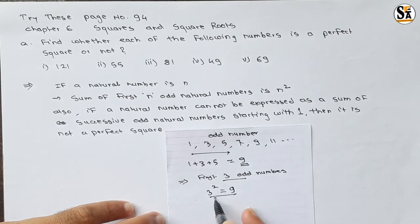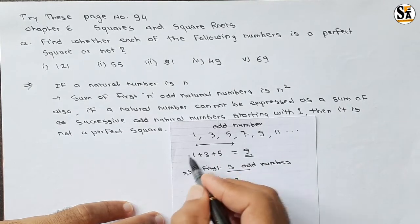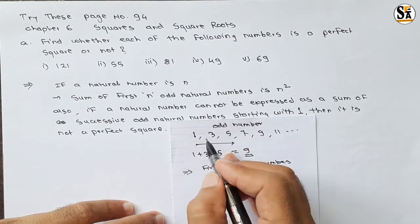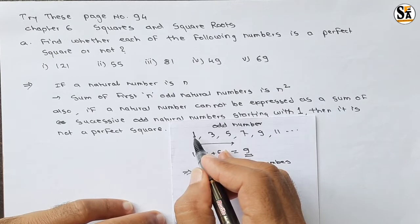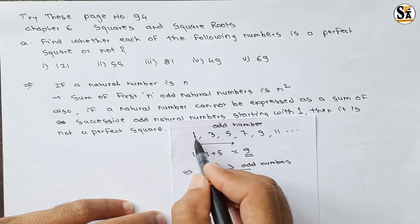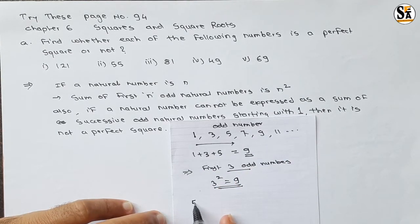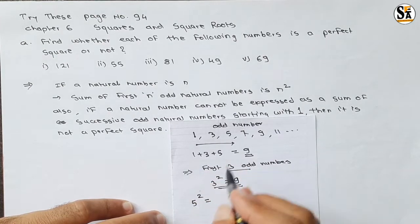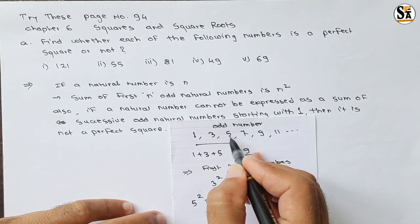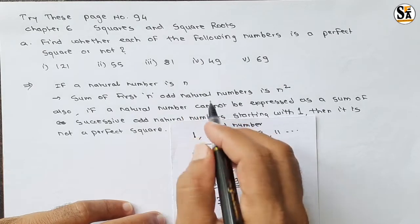Let's take one more example. We will add the first five odd numbers. Always remember, we must start with 1. So the first five odd numbers starting with 1 are: 1, 3, 5, 7, 9. Since we are adding five numbers, the sum must be 5 squared, which is 25. And indeed: 1 plus 3 is 4, plus 5 is 9, plus 7 is 16, plus 9 is 25. This statement is proved.